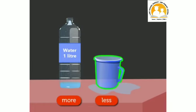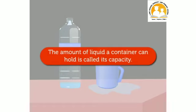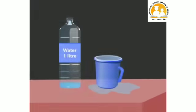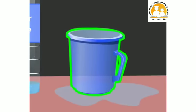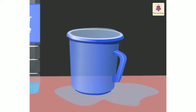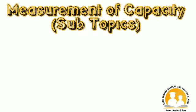The amount of liquid a container can hold is called its capacity. Here, the capacity of the jug is less than the capacity of the water bottle. Now you would have understood what capacity is.